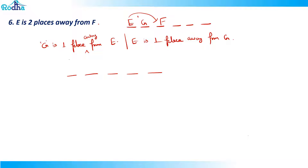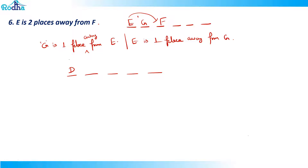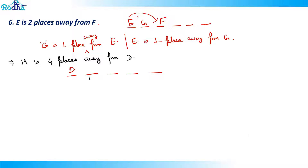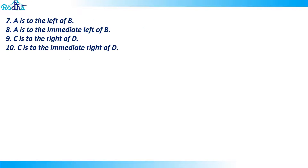For example, with positions one through five, if I place D here and the statement says H is four places away from D — that means: one place away, two places away, three places away, four places away — I need to place H there. H is four places away from D. That's always the basic meaning of such a statement.